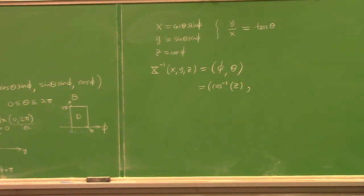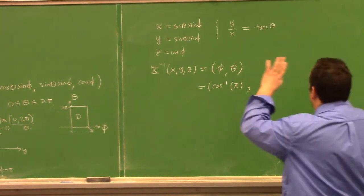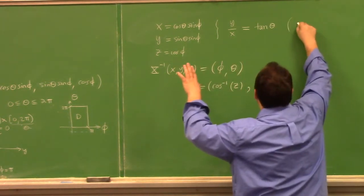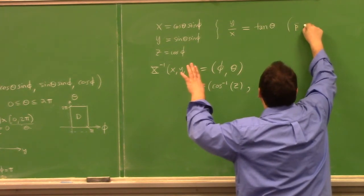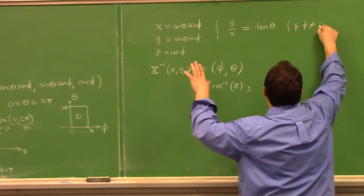Algebra is okay as long as sine of phi is non-zero. Could sine of phi be zero? When phi is zero and when it's pi. So that's kind of a little worrying. Let's just for the sake of discussion say suppose phi is not equal to zero or pi.